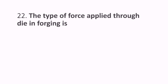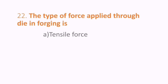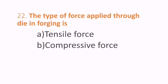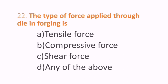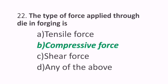Twenty-second question: the type of force applied through a die in forging is what? Options are tensile force, compressive force, shear force, or any of the above. The correct answer is compressive force. B is the correct answer.